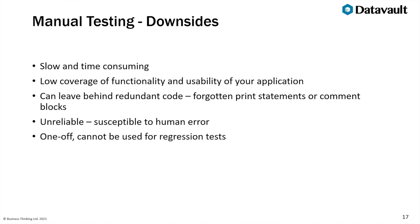Inserting print statements or commenting them out leaves behind redundant code, and forgotten print statements accidentally printing credentials in production can get you in a lot of trouble. Manual testing is also unreliable — it leaves human error as a factor. With automated testing, a computer will give you right or wrong, whereas a human may miss something. Manual testing is also one-off; you can't regressively run tests, so each time you add a new feature you can't run a full suite to confirm original functionality isn't broken.